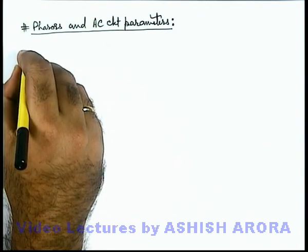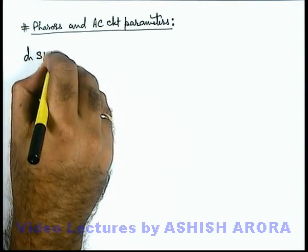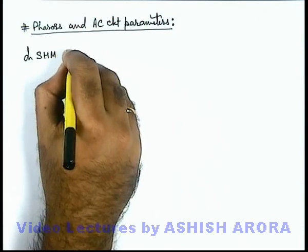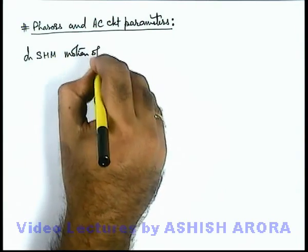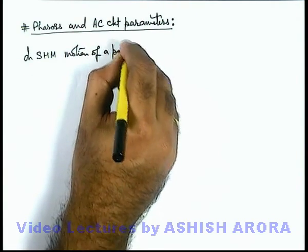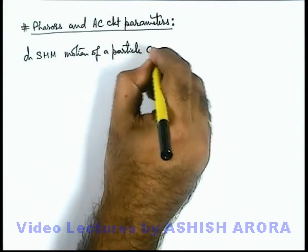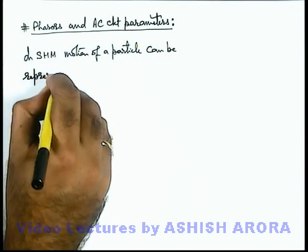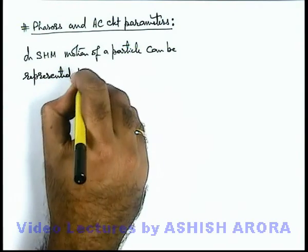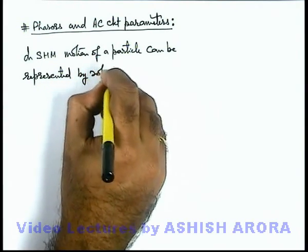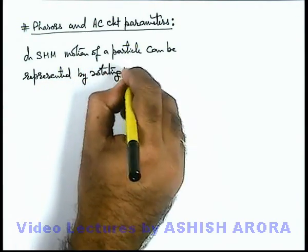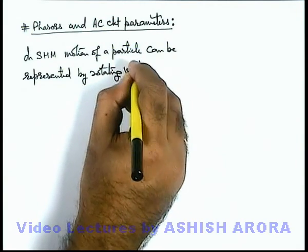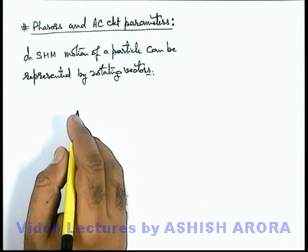Here we can write that in simple harmonic motion, motion of a particle can be represented by rotating vectors which gives us the various parameters of simple harmonic motion.